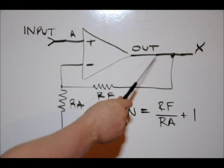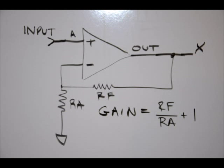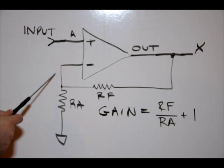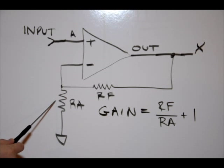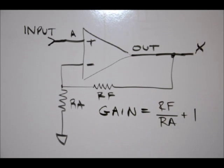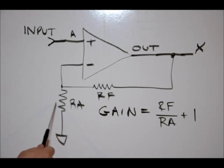Between the output and the negative input, there is a feedback resistor labeled RF. There is also another resistor pulled to ground between the negative input. The amplification is determined by these two resistors.